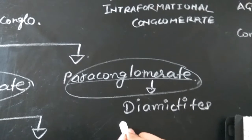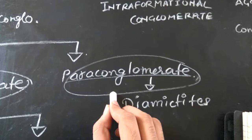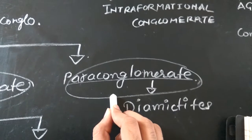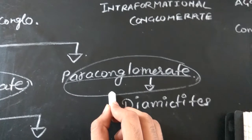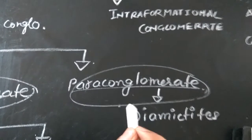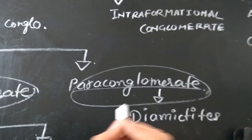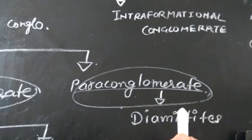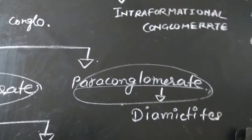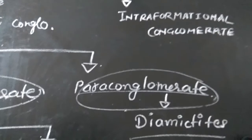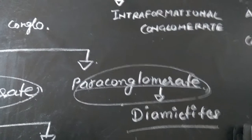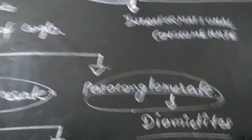Paraconglomerate indicates an unstable tectonic setting or environment. A good example is glacial till or tillite — when a glacier retreats, it leaves behind large boulders and clasts which later get clumped together to form a paraconglomerate. Diamictites, tillites, and tilloids are all considered under this category.